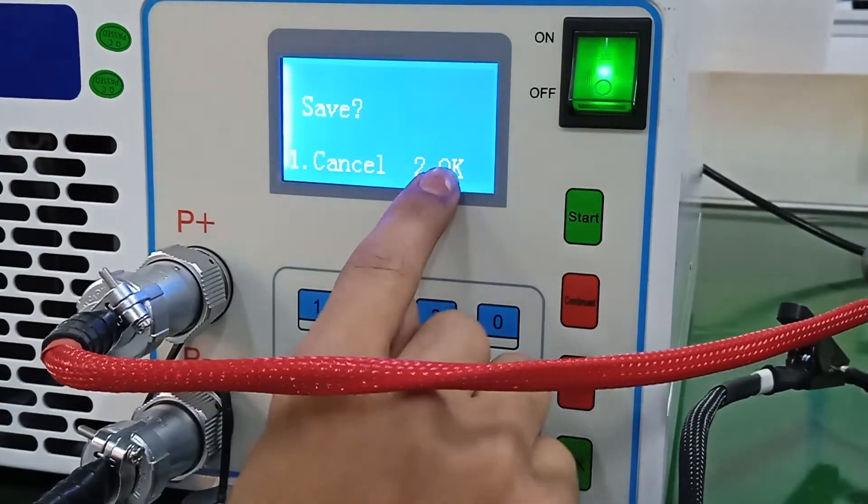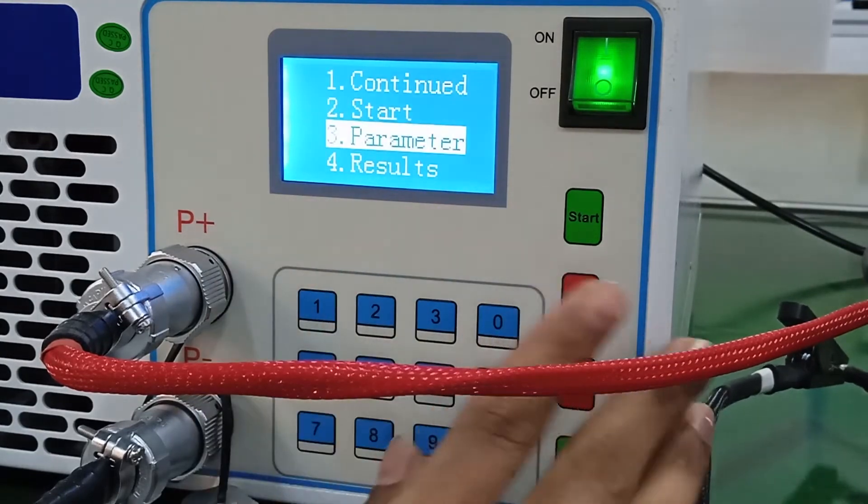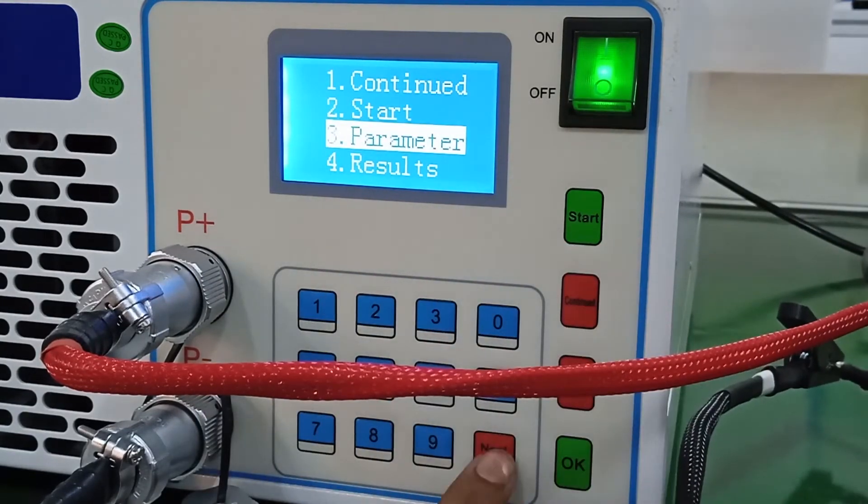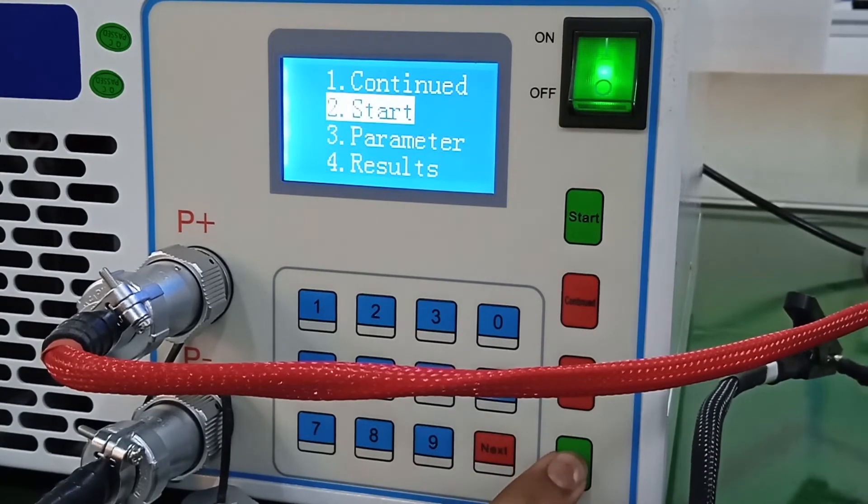Now, there is a save option. You have to just click on 2. OK. And now your system is ready. Now, go to number 2 and click on OK to start your test.